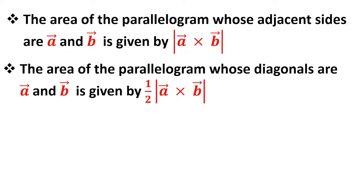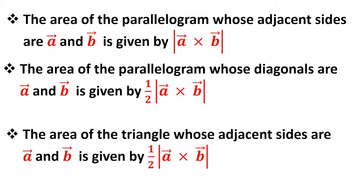For a triangle whose two sides are vectors a and b, the area is given by half of |a × b|. This is straightforward because the area of a triangle is half the area of the corresponding parallelogram.